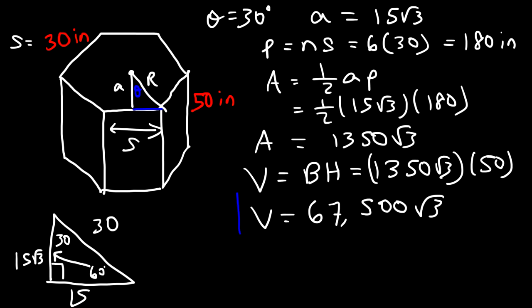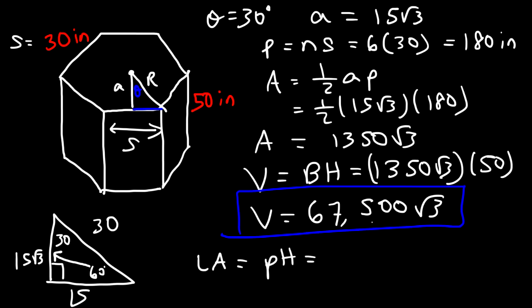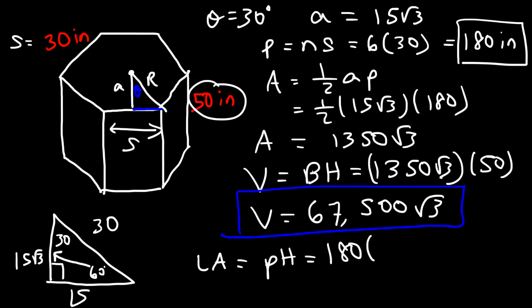So that's the volume for this hexagonal prism. Now let's calculate the lateral area — it's simply the perimeter times the height. The perimeter is 180 and the height is 50, so this comes out to 9,000 square inches.